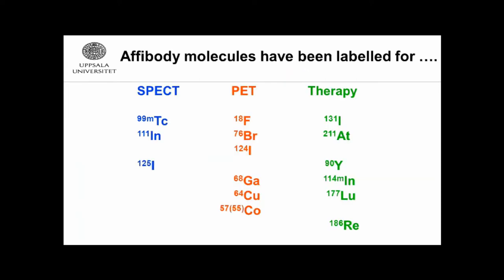It was very easy to label them and select appropriate methods. In total, we and others have labeled with 15 different nuclides, optimizing parameters for PET, SPECT, and therapy. I stopped counting when we used 60 different methods for labeling. Of those more than 60 methods, only one could kill them — and paradoxically it was chloramine T, the most common labeling method — but only because we used as a model the anti-HER2 affibody molecule, which has a tyrosine in the binding site. Otherwise, they tolerate very harsh labeling conditions.